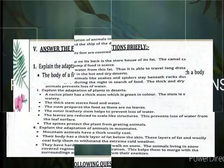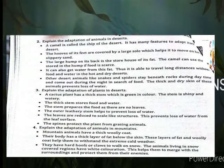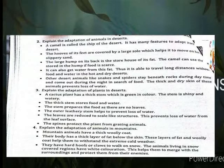Explain the adaptation of animals in the desert. The camel is called the ship of the desert. It has many features to adapt to the desert. The hooves of its feet are covered by large pads, which help it to move on hot and slippery sand. The hump found on its back stores fat. The camel can use the fat stored in the hump if food is scarce. It can also get water from this store. The camel is able to travel long distances without food and water in the hot and dry desert.